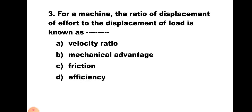Question number 3: For a machine, the ratio of displacement of effort to the displacement of load is known as — A) velocity ratio, B) mechanical advantage, C) friction, and D) efficiency. This is the definition of velocity ratio, hence the correct answer is A) velocity ratio.